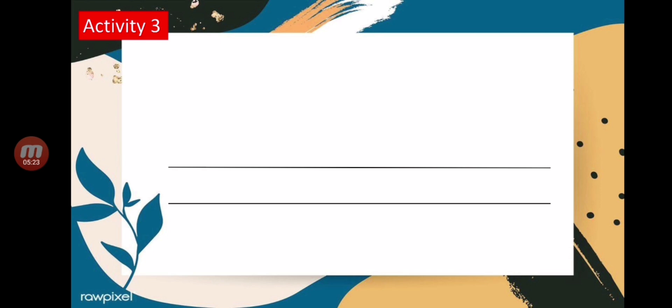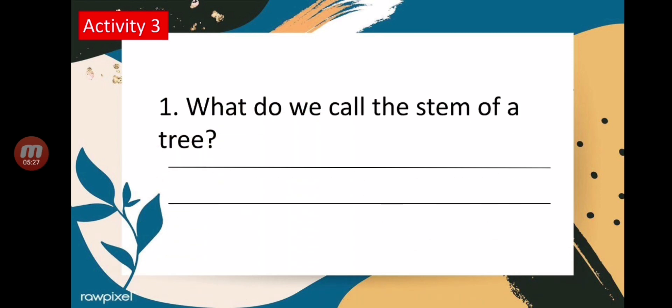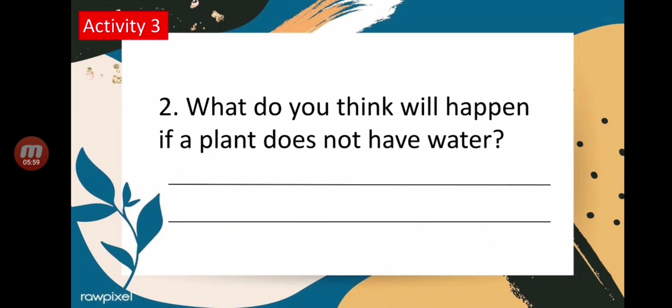Now let's proceed to activity number three. The first question is: what do we call the stem of a tree? I reviewed that a while ago, so I hope you remember it. For number two, the question is: what do you think will happen if a plant does not have water? Answer it in the blank.